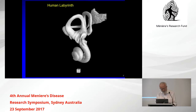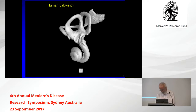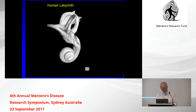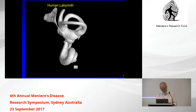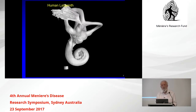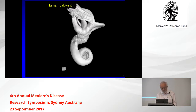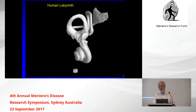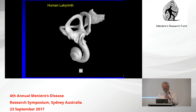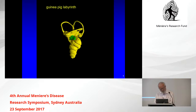Most importantly, you can see this very thin tube going up into this big sac — that is the endolymphatic duct and that is the endolymphatic sac. Down here is the cochlea, and that fluid, the endolymph, goes right through the whole system, through the canals and all the way down to the cochlea. This endolymph is so important.